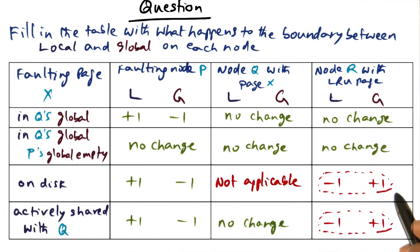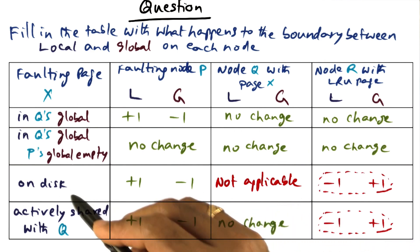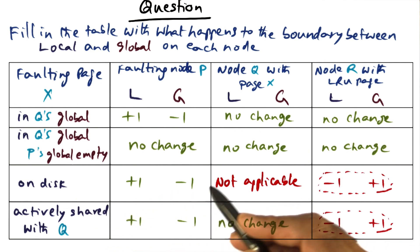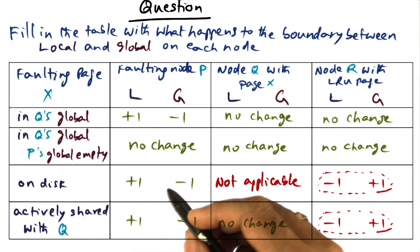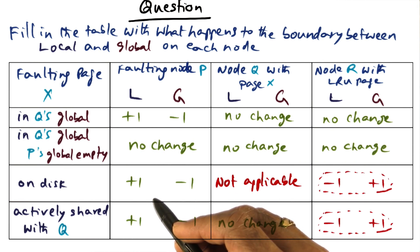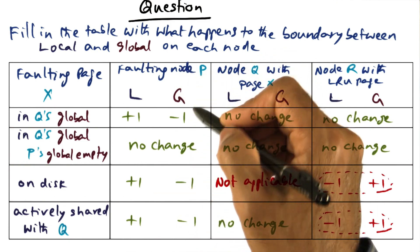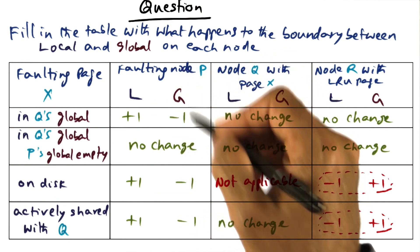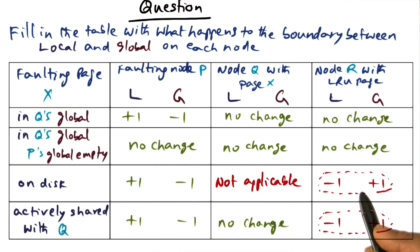So the question is what happens to the guy that has the globally oldest page. If it is on the disk and we had to bring it into the faulting node, then necessarily we have to make space in the cluster memory as a whole for this extra page because this guy's balance is going to shift and I have to throw this global page somewhere. I'm picking this guy as a replacement candidate because he has the globally oldest page.